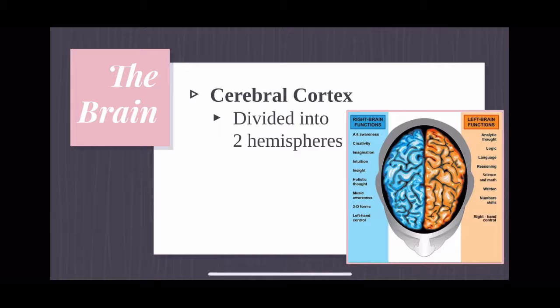And then it would obviously send signals down my motor neurons to move my hand away. The cerebral cortex is actually divided into two hemispheres. So it is physically divided into those two. We call them the right brain and the left brain. So it's super scientific.